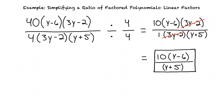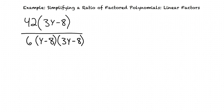We can't simplify further, so this is our final simplified expression. Let's look at another example: 42 times (3y minus 8) divided by 6 times (y minus 8) times (3y minus 8).